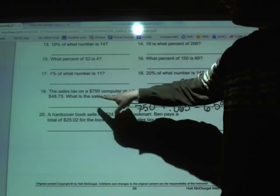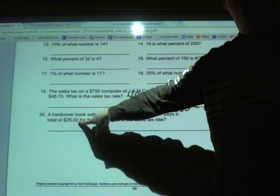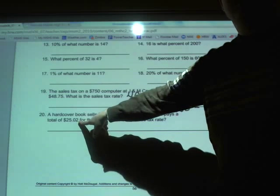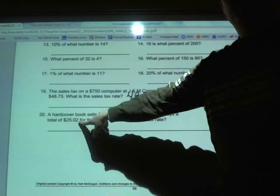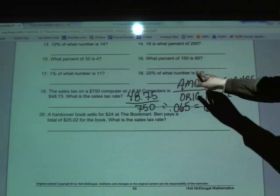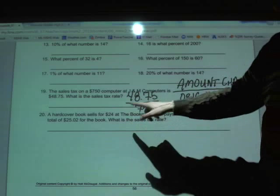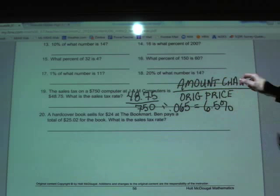Well, if it started at $24, and it went to $25.02 with tax, the amount of change is $1.02, because the price went up by $1.02. So when you're looking for the amount of change in question number 20, that figure is going to be $1.02. Plug in the original price, divide, you change it to a percent, and you'll end up with your sales tax figure.